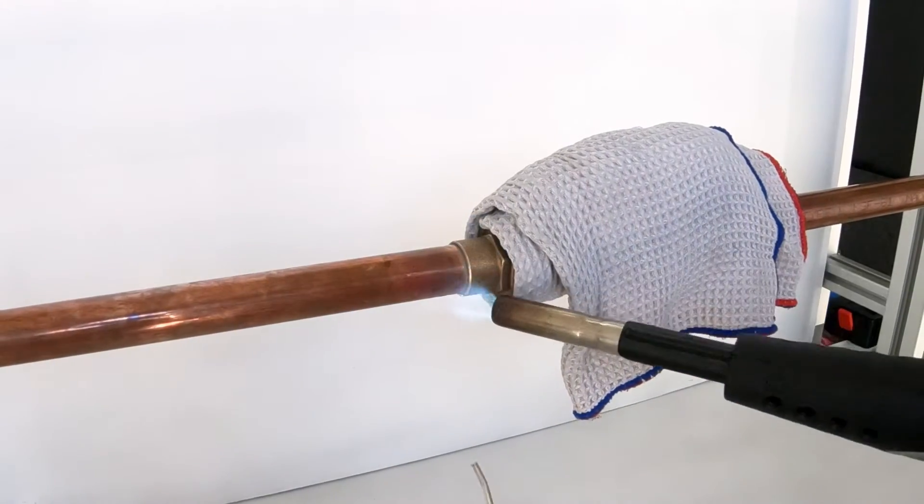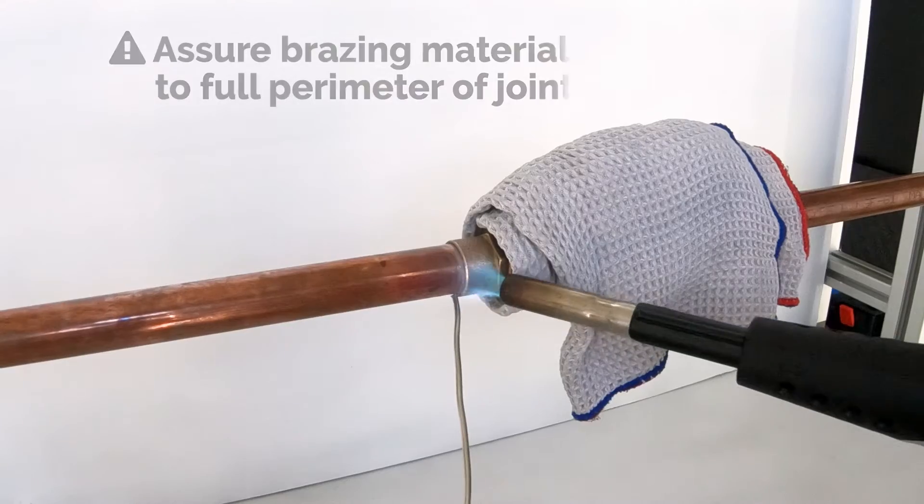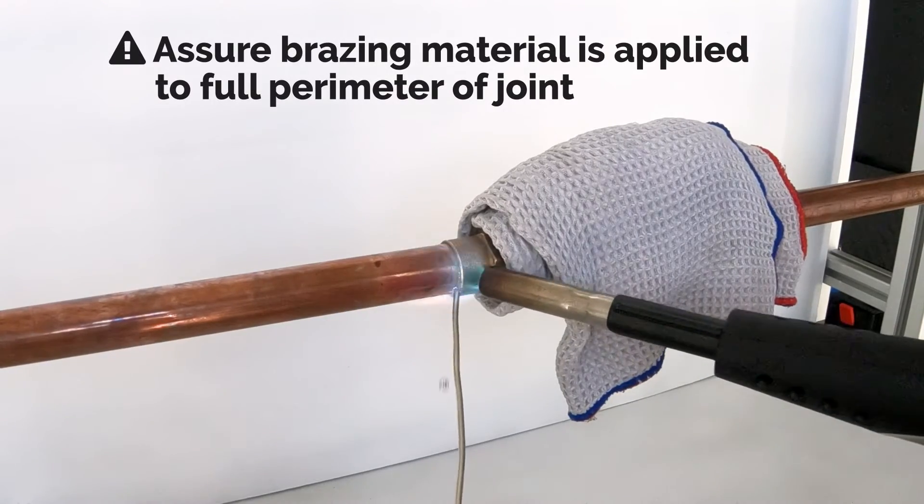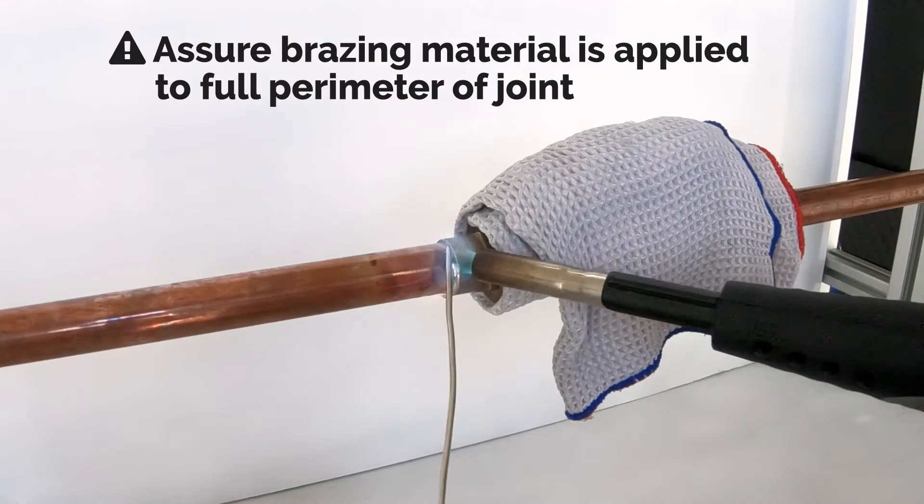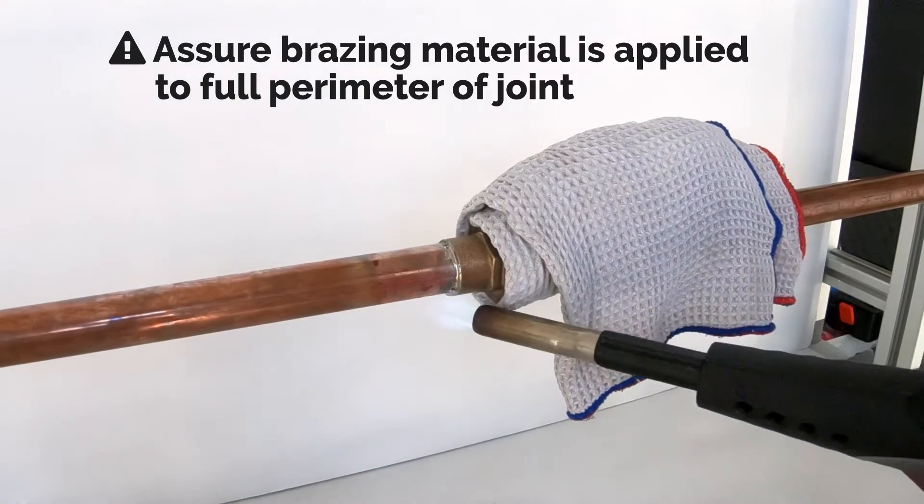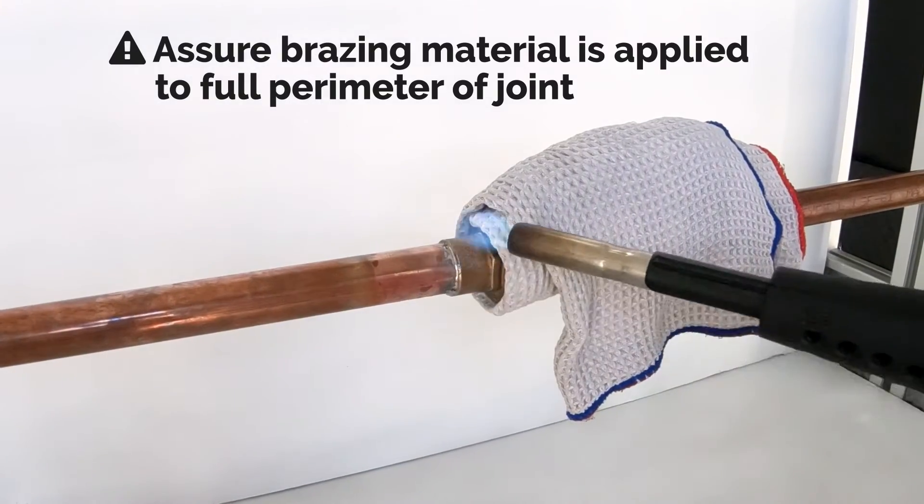Now referring to horizontal installations, start applying the filler metal at the bottom of the joint, then upward. By starting at the lowest position, a dam will be created within the joint to reduce runoff of filler material throughout sweat process.